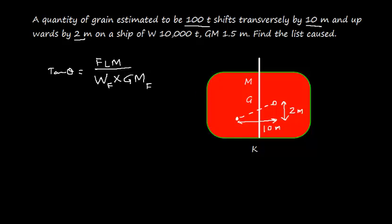Let's work out the list moment first. We can find the final list moment, FLM, by simply multiplying weight multiplied by distance. The weight and this distance is a horizontal distance, or a transverse distance.